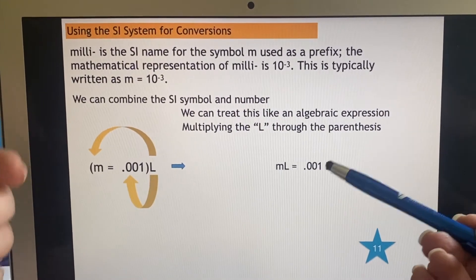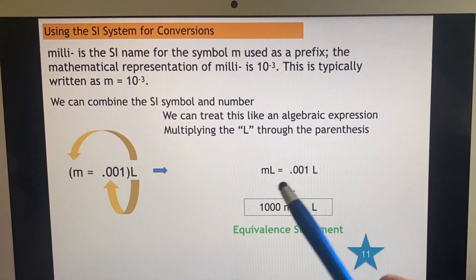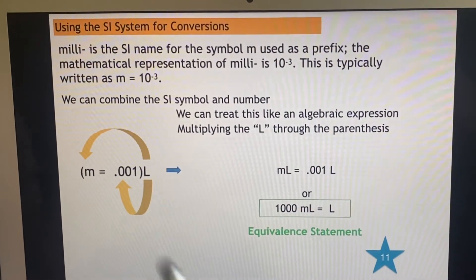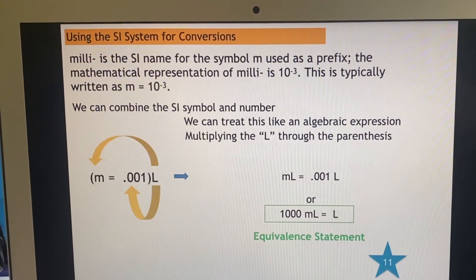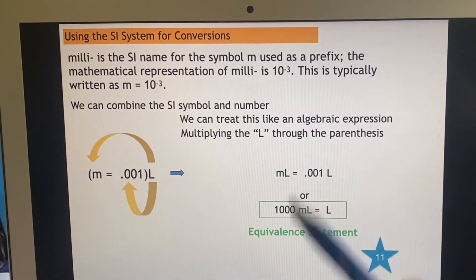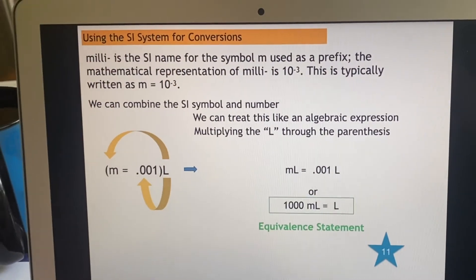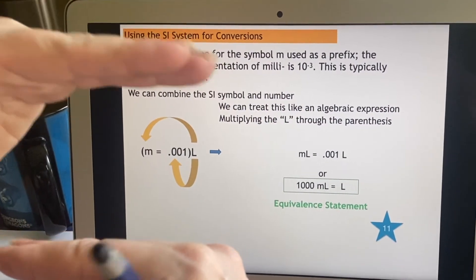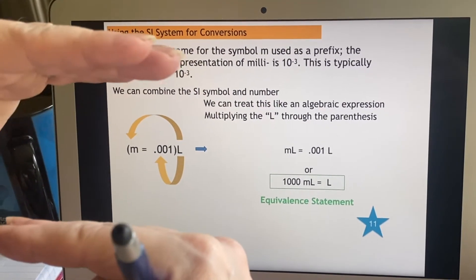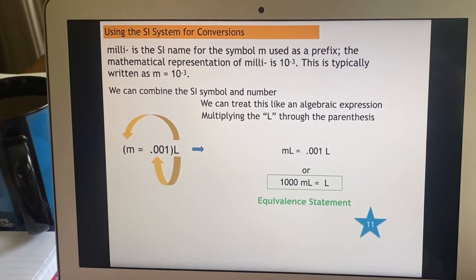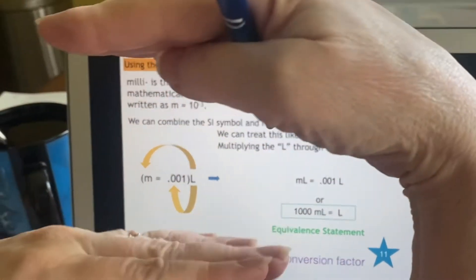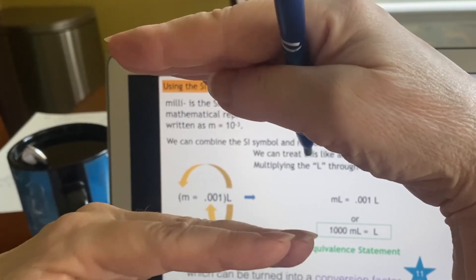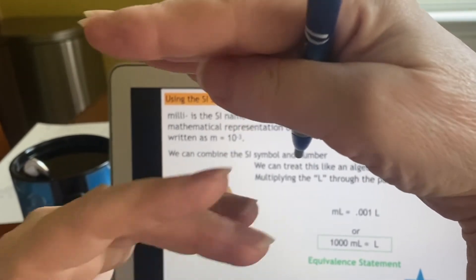Although more often you'll see somebody write one thousand milliliters equals one liter. This is called an equivalent statement. Whenever you have an equivalent statement, you can use it to create an appropriate conversion factor. Since these are equal, I can stack them up either way - one thousand milliliters divided by a liter, or a liter on top and one thousand milliliters on the bottom. Since a liter is exactly the same thing as one thousand milliliters, I've created a fraction that is really equal to one, and if I use it to multiply something else, nothing will change.